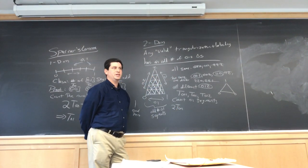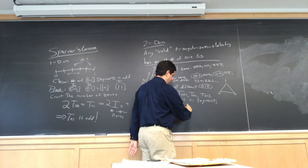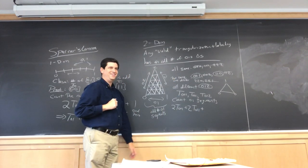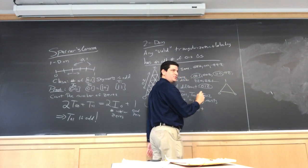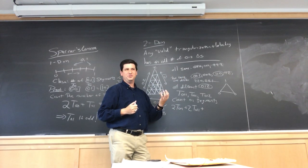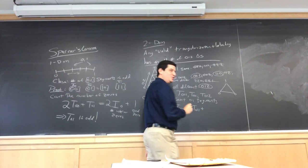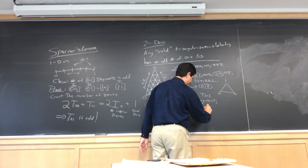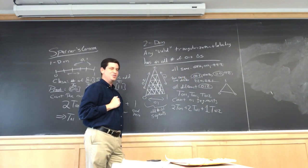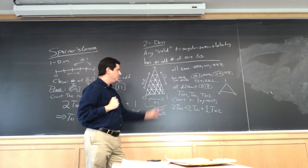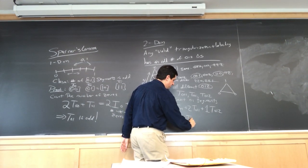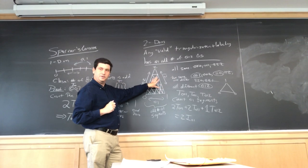How about 0, 1, 1? How many does that give us? Also two. And how about T_0,1,2? So, this counts how many 0, 1 segments we have. But it double counts everything that's interior. Right?